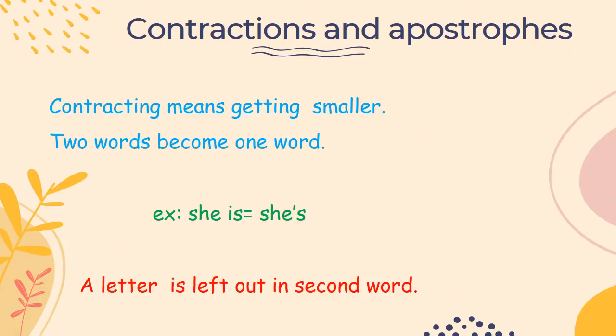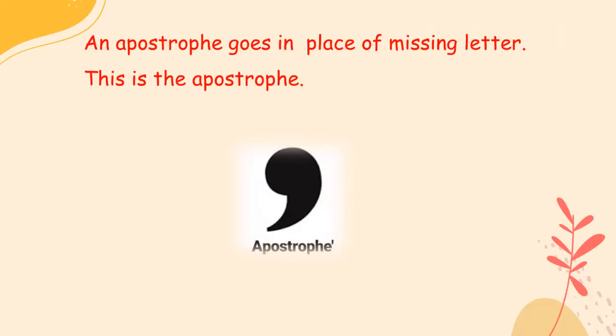Contractions and Apostrophes. Contracting means getting smaller. Here we make two words into one. Look at this example: 'She is.' Can you see the first letter of the second word is left out? Instead of that letter, we keep an apostrophe. This mark here is the apostrophe.